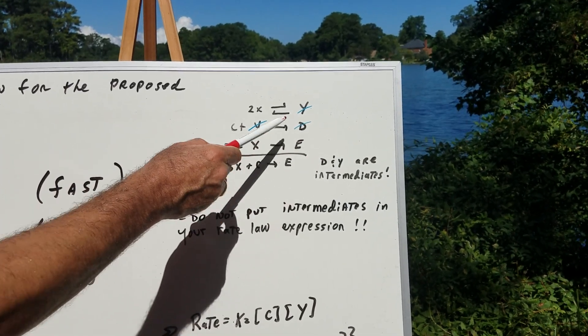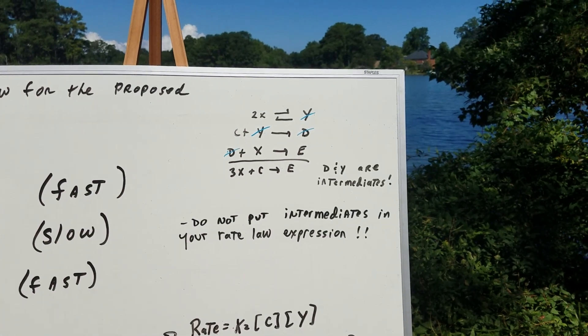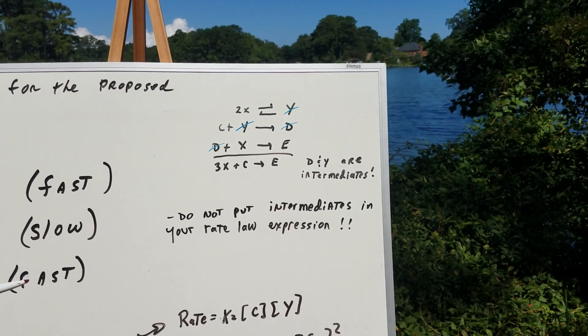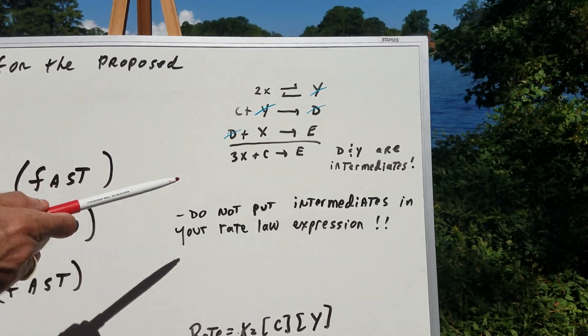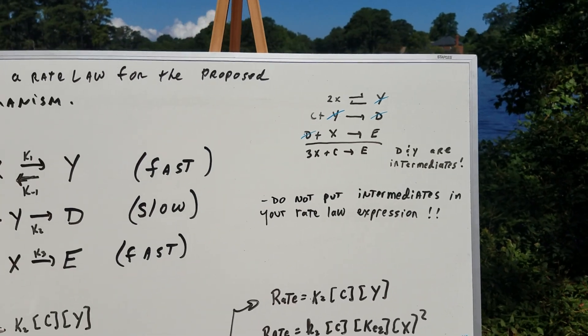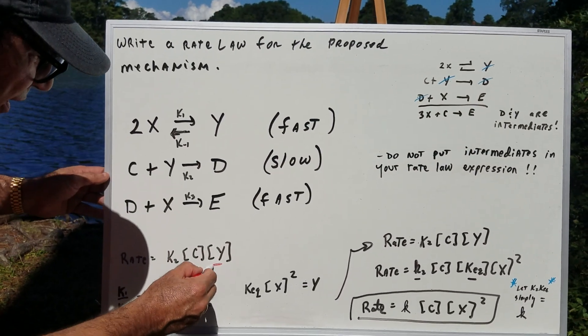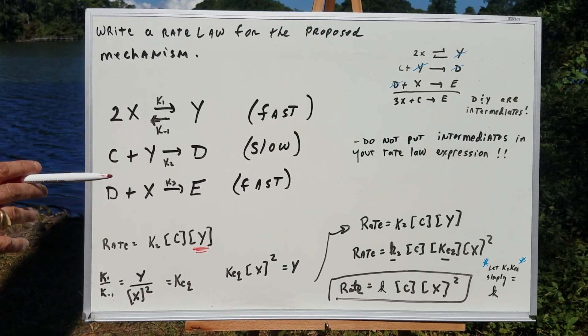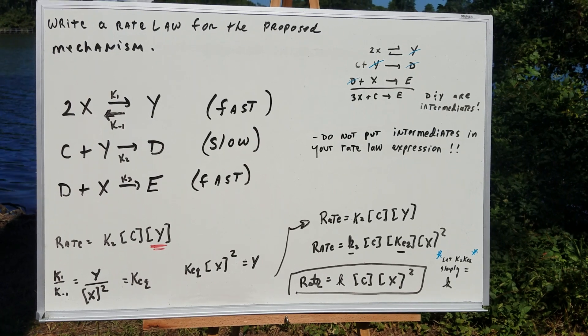So if you notice that the Y and the D cancel out here, these are intermediates. Now, you might say, well, what does this mean? Do not put an intermediate in the rate law expression. So that means when you go back, this term can't be in the rate law expression because Y is an intermediate. So that means we must substitute for it.